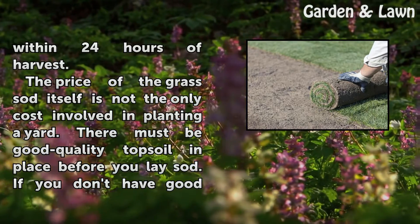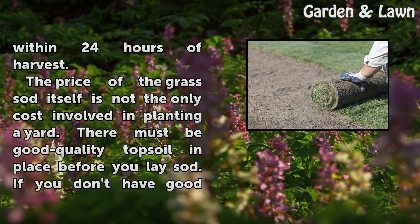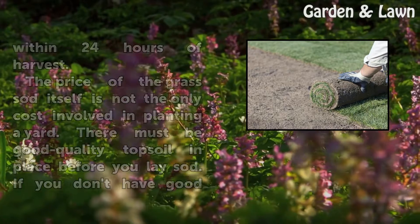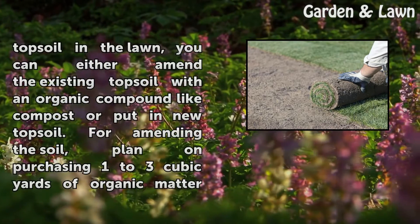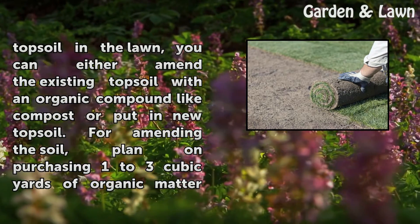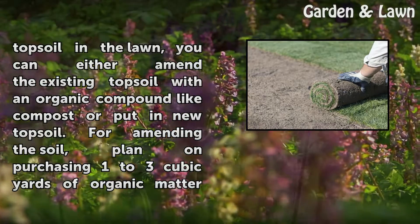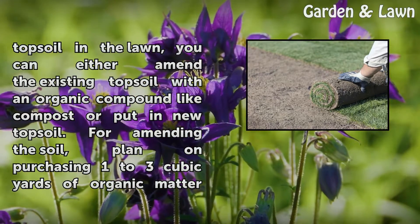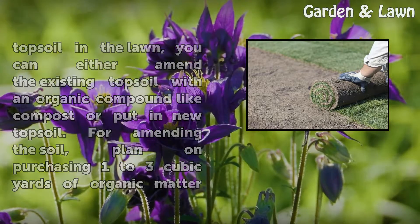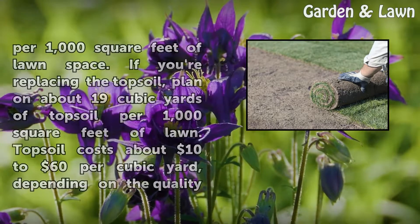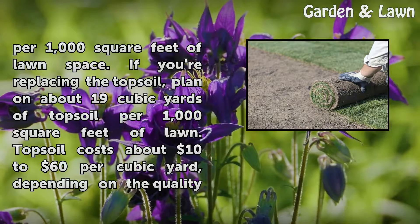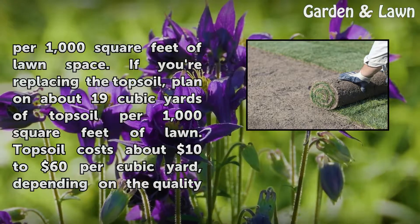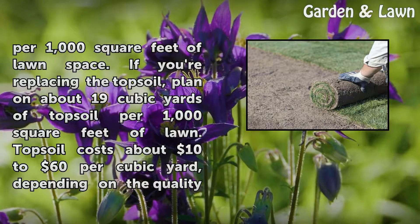The price of the grass sod itself is not the only cost involved in planting a yard. There must be good quality topsoil in place before you lay sod. If you don't have good topsoil in the lawn, you can either amend the existing topsoil with an organic compound like compost or put in new topsoil. For amending the soil, plan on purchasing 1 to 3 cubic yards of organic matter per 1,000 square feet of lawn space. If you're replacing the topsoil, plan on about 19 cubic yards of topsoil per 1,000 square feet of lawn.